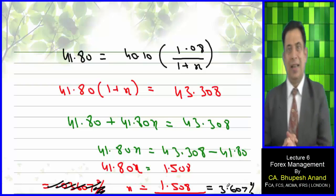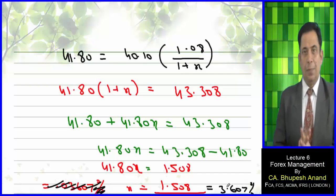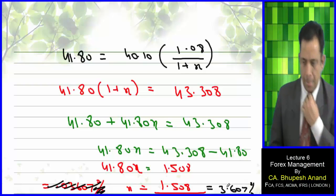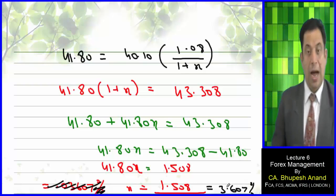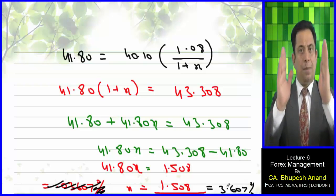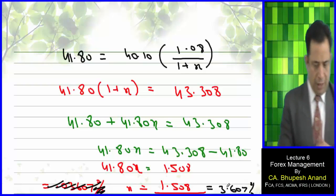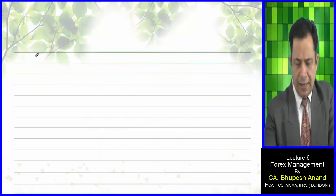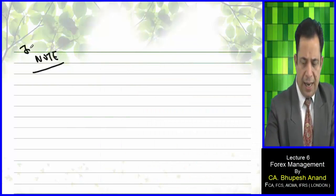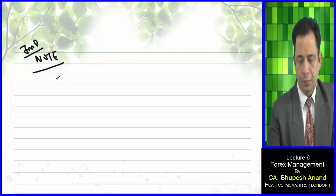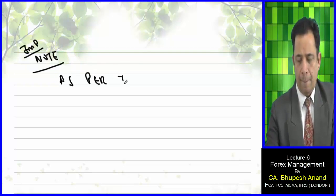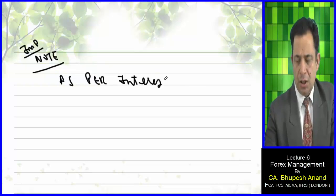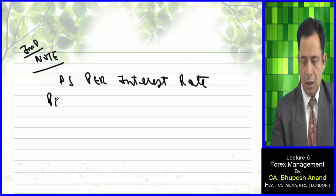Inflation in USA (dollar) is 3.607 percent. You can verify this on your calculator. Now, as per Interest Rate Parity Theory (IRPT), it is the interest rate which is the prominent factor for determining the exchange rate.